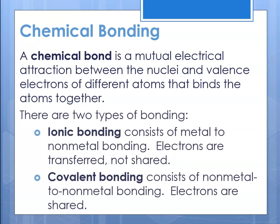There are two types of bonding that we learned about: ionic bonding, which consists of metal and nonmetal bonding, and the electrons are transferred, not shared. The metal typically loses the electrons and the nonmetal gains them. Whereas with covalent bonding, it's nonmetal to nonmetal bonding, and the electrons are shared between two or more atoms.